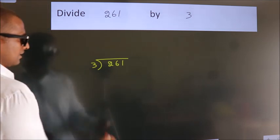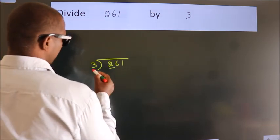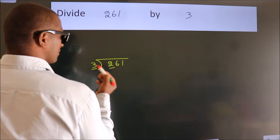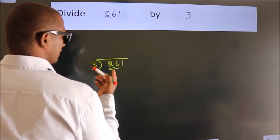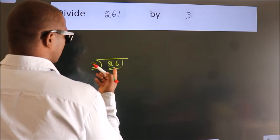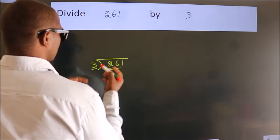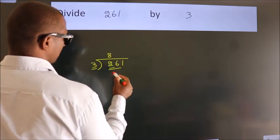Next. Here we have 2, here 3. 2 is smaller than 3, so we should take 2 numbers, 26. A number close to 26 in the 3 table is 3 times 8, which is 24.